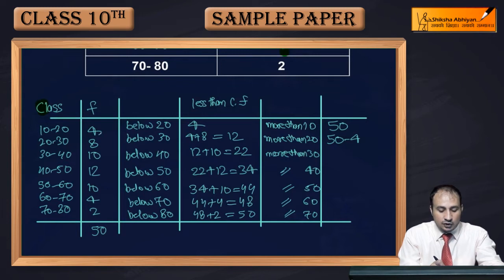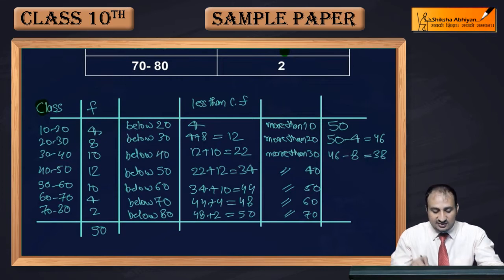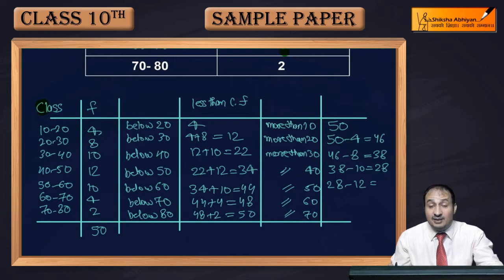After this, when you minus 8 from 46, then more than, all of this 10, 12, 10, 4, 2 will come. So subtract 8 from 46, so 38. Similarly, after this, you will minus 10 from 38, so 28. And then you will minus 12 from 28, so how much will you get here? You will get this is 16. And after this, you will minus 10 from 16, so you will get 6. And then you will minus 4 from 6, so you will get 2.